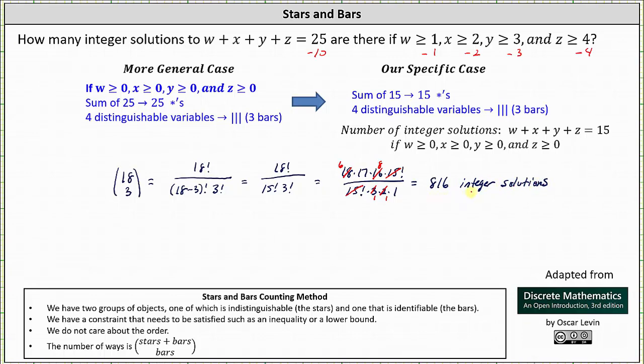There are 816 integer solutions to the original equation w plus x plus y plus z equals 25, if w is greater than or equal to 1, x is greater than or equal to 2, y is greater than or equal to 3, and z is greater than or equal to 4. I hope you found this helpful.